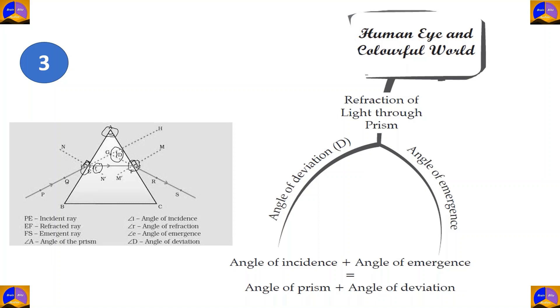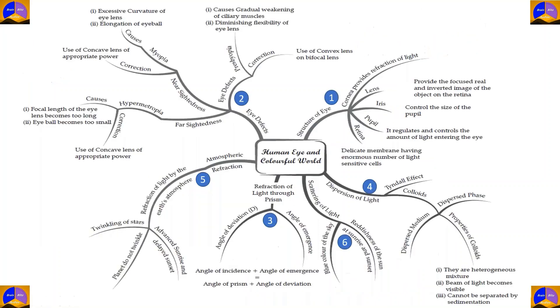Now, the angle of deviation is the angle between the original incident ray expanded and the original emergent ray expanded. When you extend both of them, they meet at a point and create an angle known as the angle of deviation. The important formula here to note is that the angle of incidence plus the angle of emergence would be equal to the angle of prism plus the angle of deviation. When you add angle A and angle D, you would get the same sum as adding angle I and angle E.